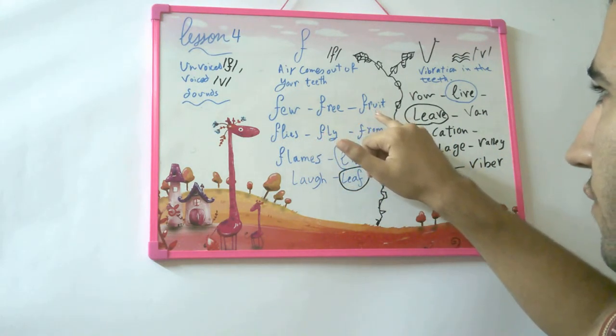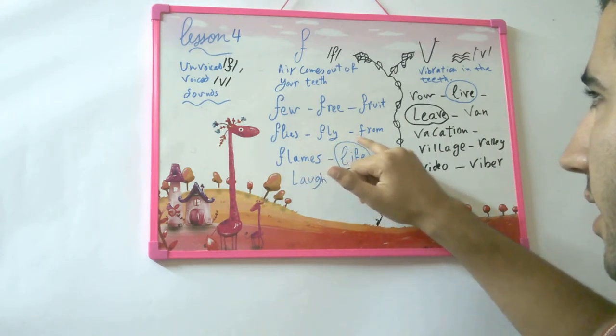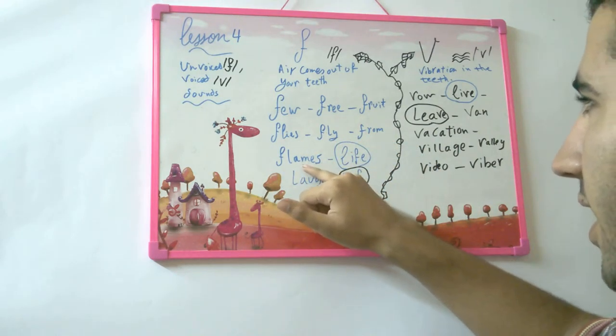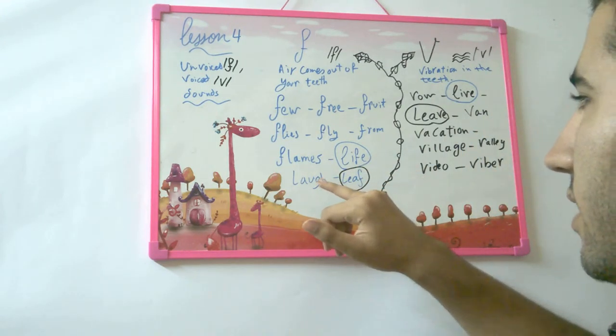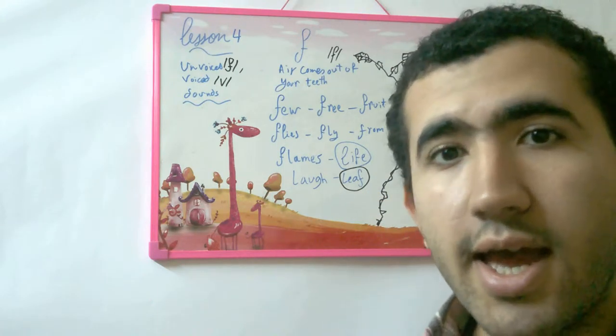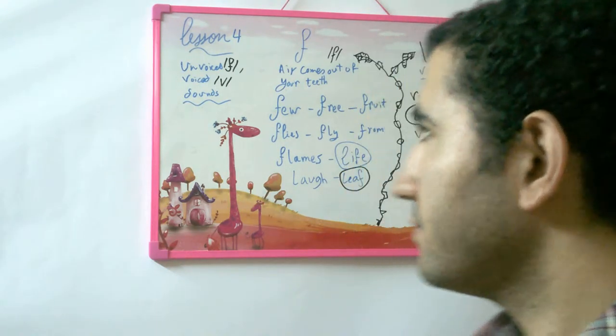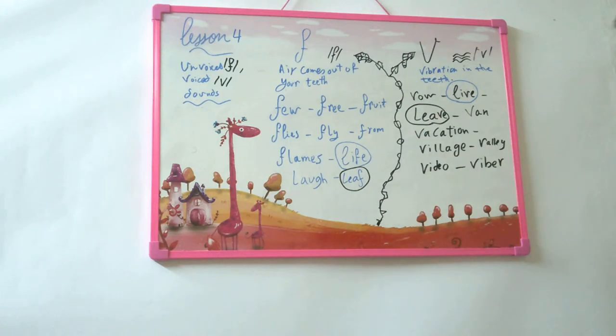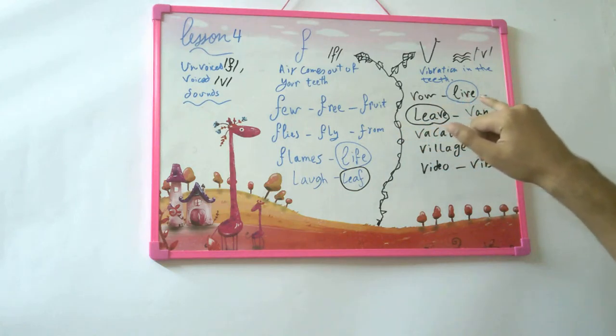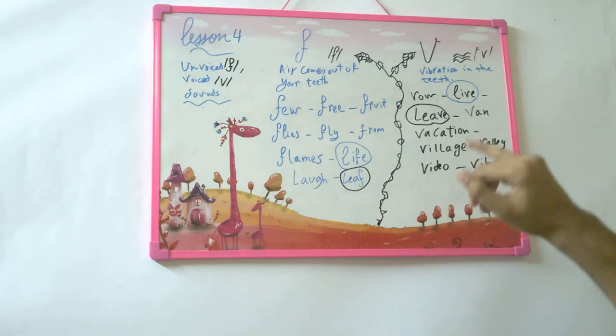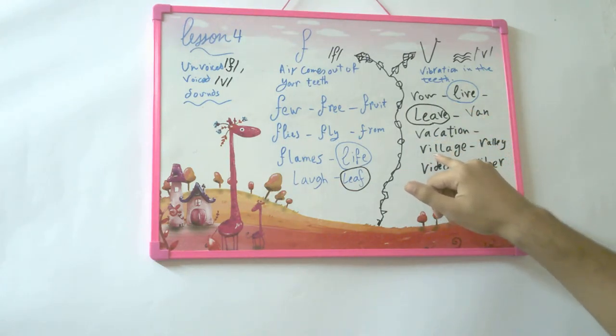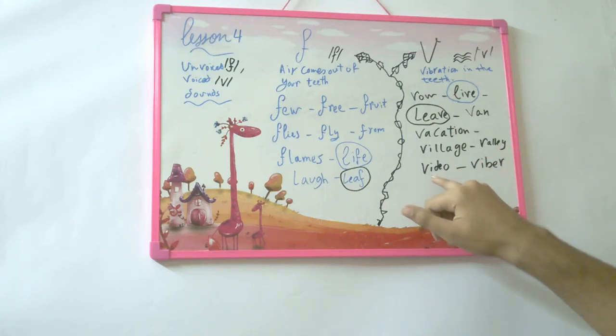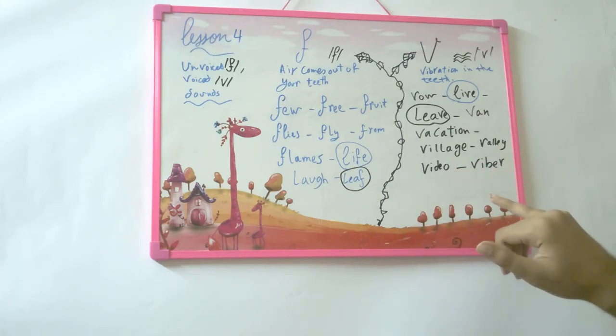Let's look at the V sound. The sound, vibration in the teeth. So vow, vow, live, live, van, vacation, village, valley, video, viper.